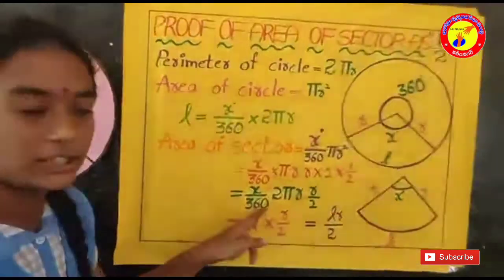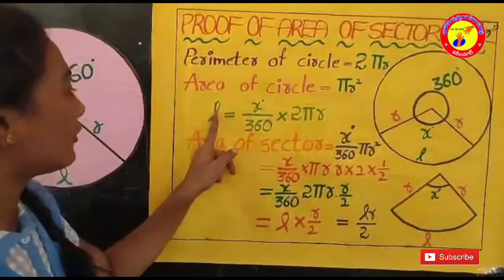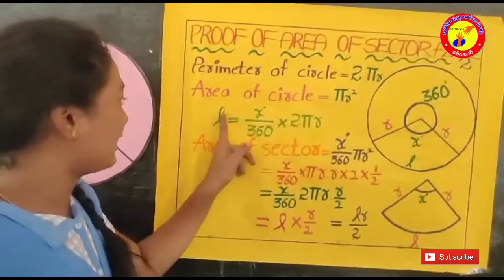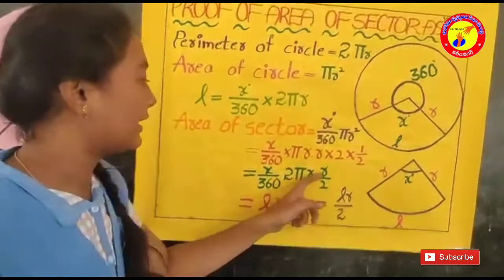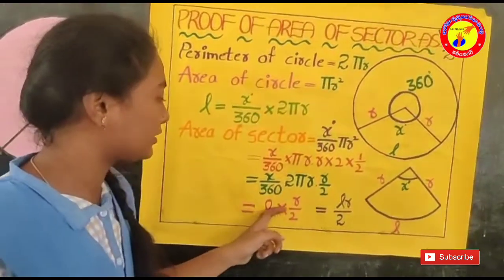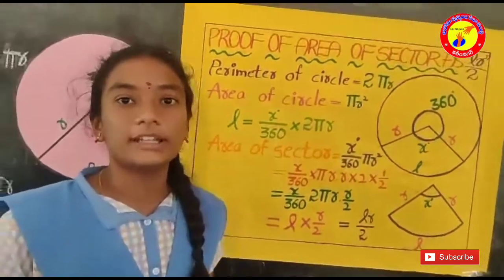Here x by 360 into 2πR is the value of the arc length L. Therefore x by 360 into 2πR is L. And R by 2 is R by 2. Then L into R by 2 is LR by 2. Thank you.